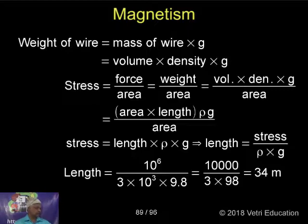Therefore, length equals stress, which is given in the problem: 10^6 divided by ρ density 3 times 10^3, and g can be taken as 9.8. Simply substitute and find the solution: 34 meters.